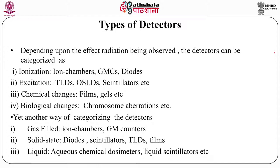A third category of detector depends on the chemical changes that radiation produces. We are all familiar with films and how radiation can cause darkening — on a photographic film, ionizing radiation can cause darkening, so films can be used to detect radiation. Similarly, there are certain gels which can also be used because radiation can initiate polymerization or certain other changes, making those gels usable as radiation detectors or dosimeters.